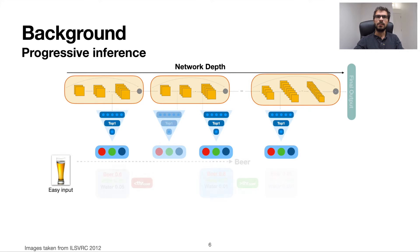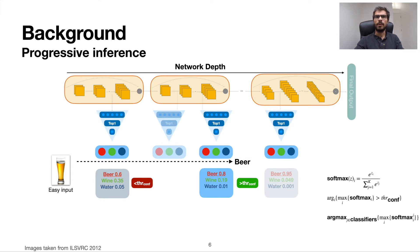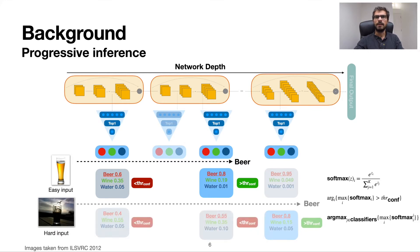For instance, an easier input sample might exit a classifier which is confident enough about its prediction, without needing to forward-propagate until the end of the DNN. For this reason, we compare the max probability of each classifier as a softmax with a confidence threshold to decide on whether to exit or not. On the other hand, the classifier that is confident enough about a more complex image might be deeper in the architecture.